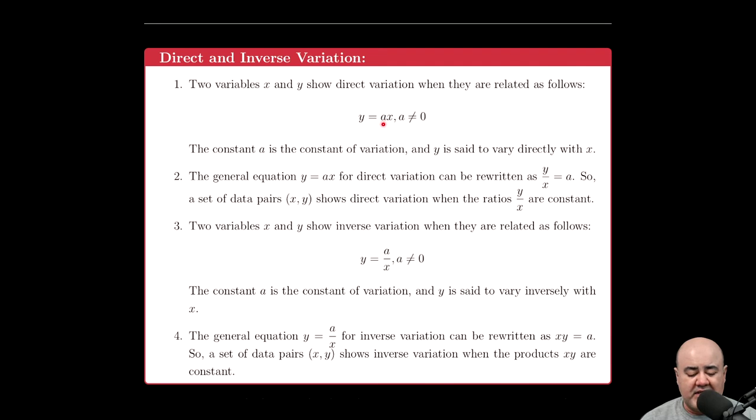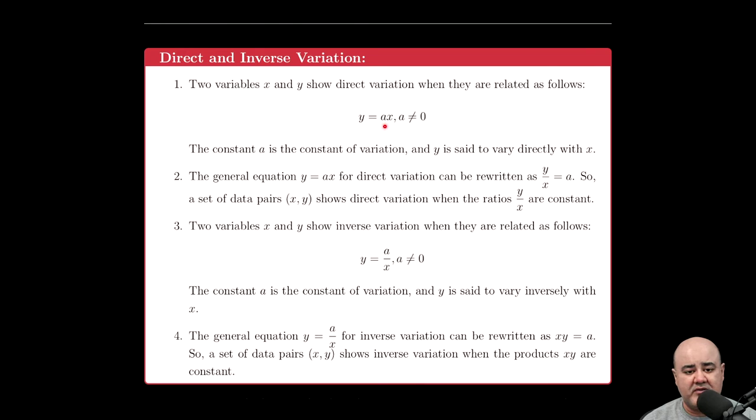This is a common misconception that students have: that a has to be a positive number or a number greater than one. That's not the case at all. A could be positive, negative, a fraction, or a decimal. So an example of direct variation is y = 4x, because 4 is a constant, but also y = -4x—that's also a direct variation. It does not have to be positive. In fact, it could be a fraction as well. So y = (1/4)x is a direct variation as well. More on this when we get into more examples.